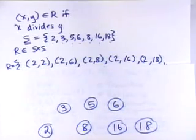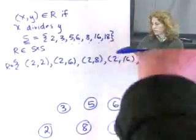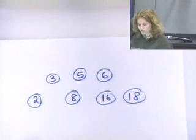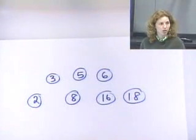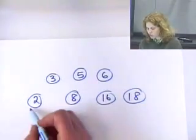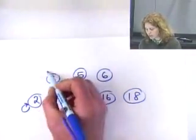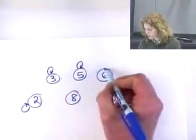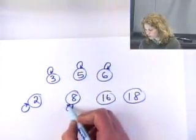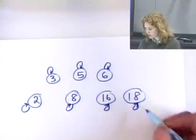And then I'll draw arrows where there's points. So if something divides something else, I'm going to draw an arrow from the small one to the big one. So 2 divides itself. Everything divides itself.